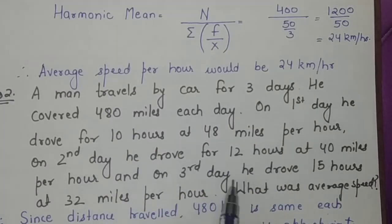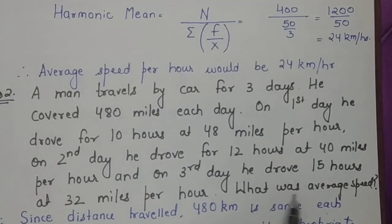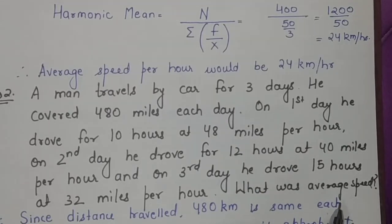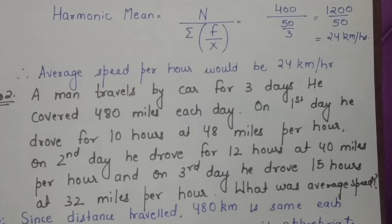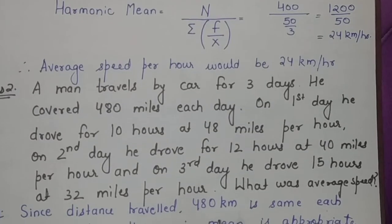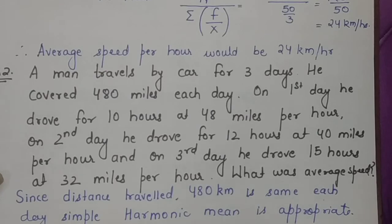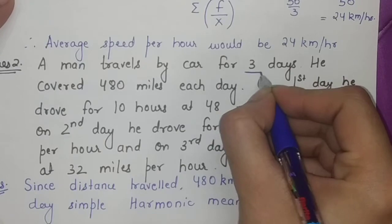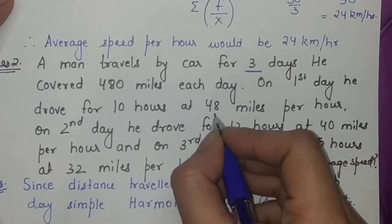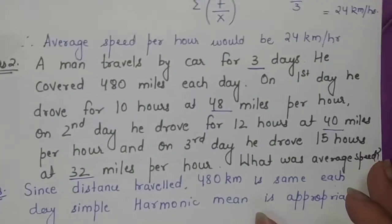Since the distance traveled is 480 kilometers, same for each day, simple harmonic mean is more appropriate so we can proceed. Here number of days are three and the speed is 48, 40, and 32.